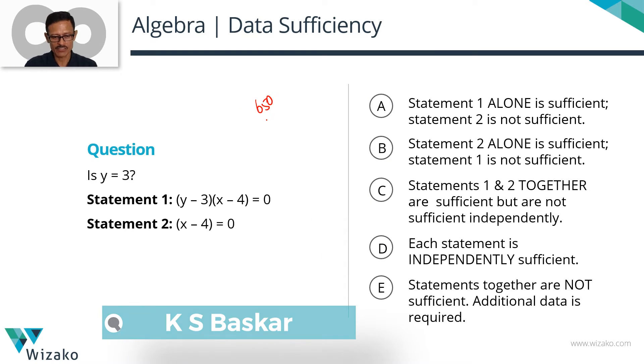This is a 650-level GMAT question, not a very difficult one in that sense. What we need to answer is, is y equal to 3? We've been given two statements. It's an is question. For any is question, the answer will be yes or no.